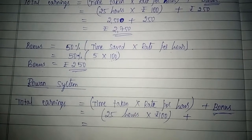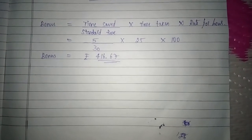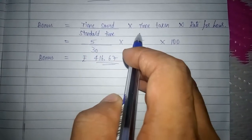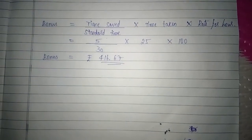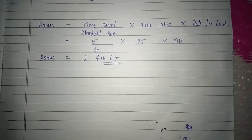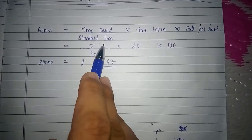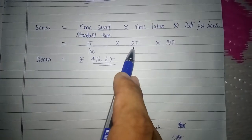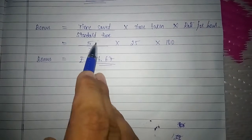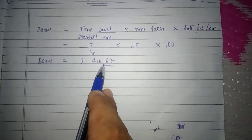Let us calculate bonus under Rowan system. Under Rowan system, bonus is calculated using the formula: bonus = (time saved ÷ standard time) × time taken × rate per hour. We require time saved, standard time, time taken, and rate per hour. Time saved = 5 hours, standard time = 30 hours, time taken = 25 hours, and rate per hour = rupees 100. So bonus = (5 ÷ 30) × 25 × 100 = rupees 416.67.